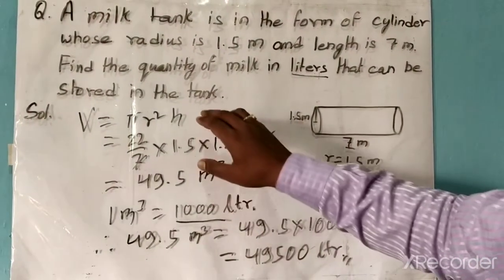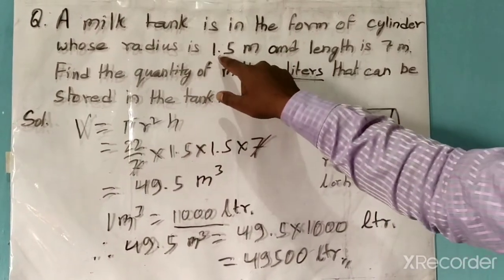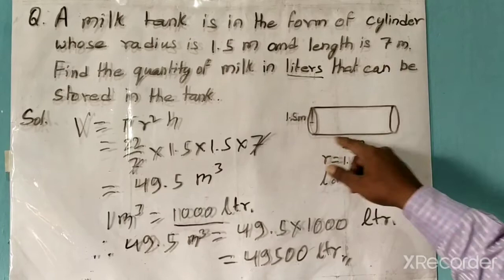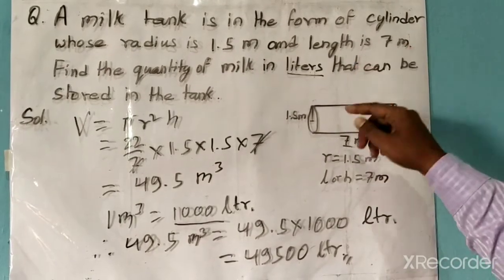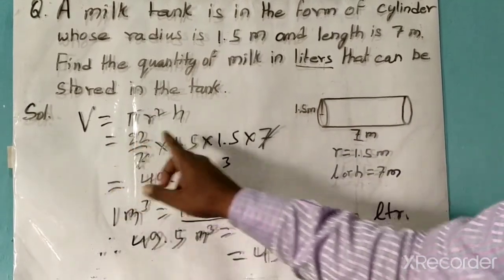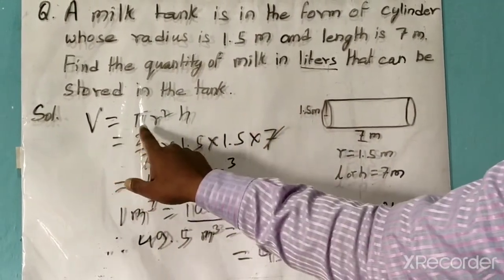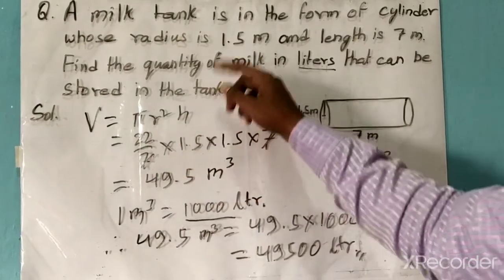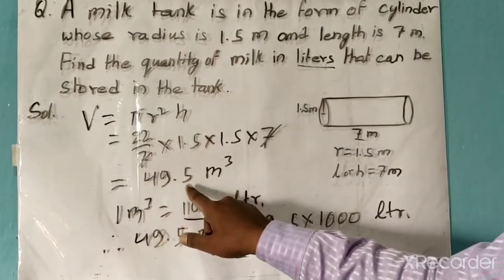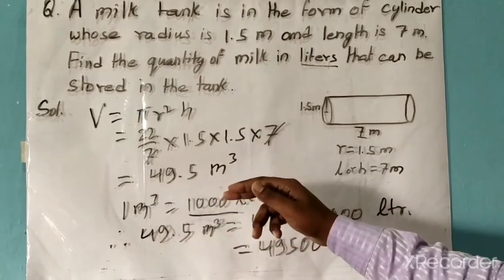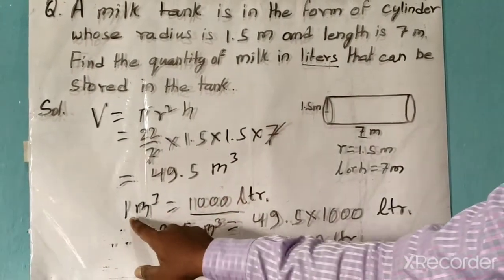Again, in the question it is given that 1.5 meters is the radius of the cylinder and 7 meters is the length of the cylinder. We have to find the capacity of this cylinder in liters. So we know that to find the volume of a cylinder, V equals pi r squared h.